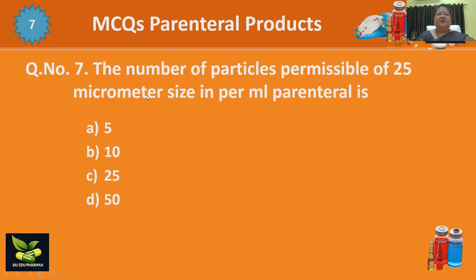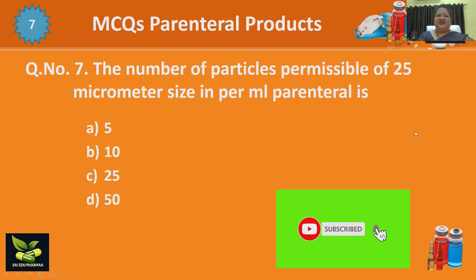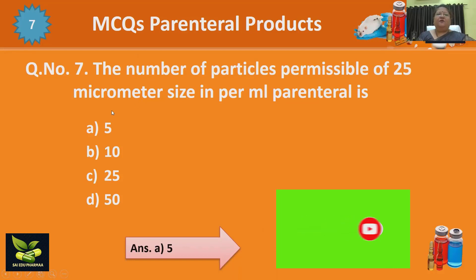The number of particles permissible of 25 micrometer size per ml in parenteral preparations is 5. According to the particulate matter specifications, the permissible range for 25 micrometer size particles is only 5 per ml.